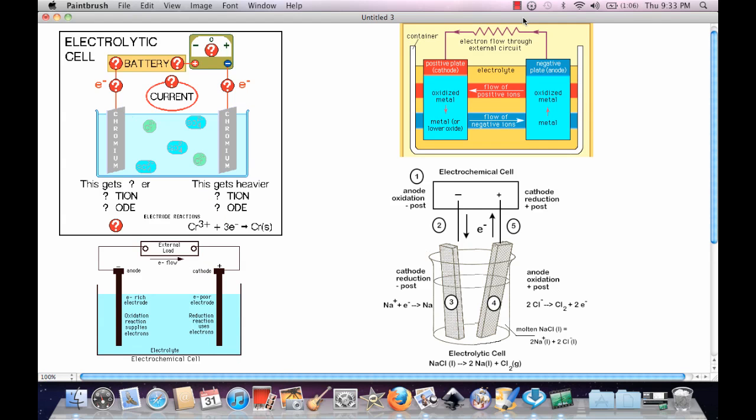So let's take a look at an electrolytic cell. As you can see, here's an electrolytic chemical cell. The oxidation reaction here at the anode will go up here to the external load, to the cathode, which is electron-poor.